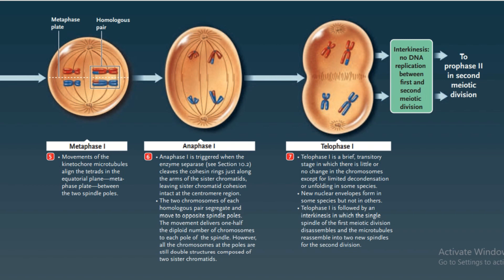In Telophase I, a brief transitional stage, there is little or no change in chromosomes except for limited decondensation in some species. New nuclear envelopes form in some species but not in others. Telophase I is followed by interkinesis, in which the single spindle of the first meiotic division disassembles and microtubules reassemble into two new spindles for the second division.